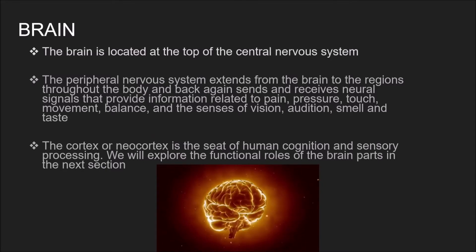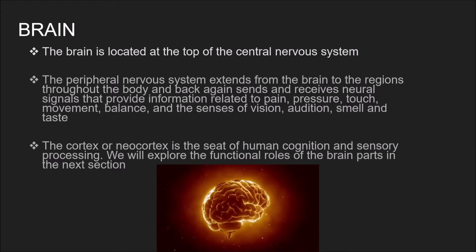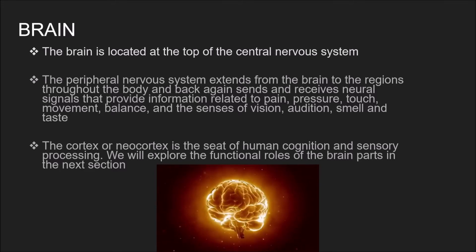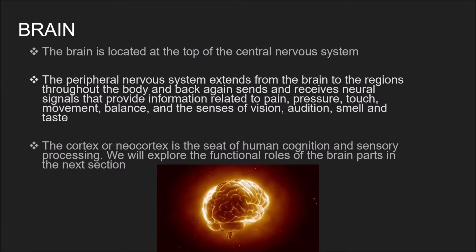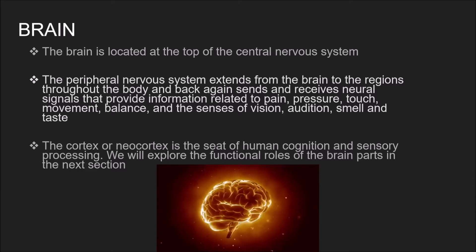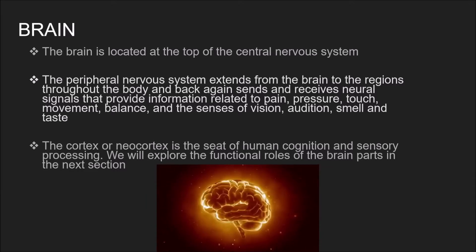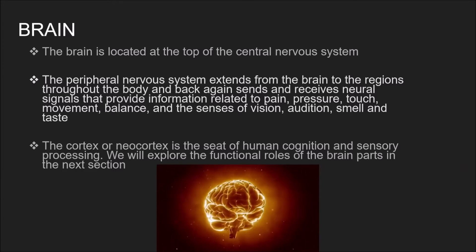The brain is located at the top of the central nervous system. It is protected by the skull and is interconnected with the body through the brain stem region to the spinal cord. The peripheral nervous system extends from the brain to regions throughout the body and back again. It sends and receives neural signals that provide information related to pain, pressure, touch, movement, balance and the senses of vision, audition, smell and taste.